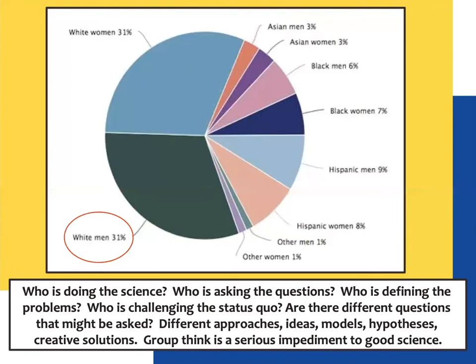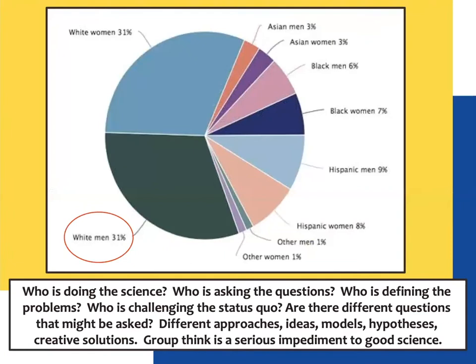When you look around your institution or your program, think about who's actually there. If we looked at the demographics of undergraduate programs or downtown Toronto or Vancouver, who's doing the science and asking the questions may not reflect the actual population mix. That matters because we may be missing something. Challenging the status quo is not a bad thing — different questions might be asked, different approaches taken. Groupthink is a very serious impediment to good business, governance, science, problem solving, and decision making. Groupthink can be a barrier to excellence.